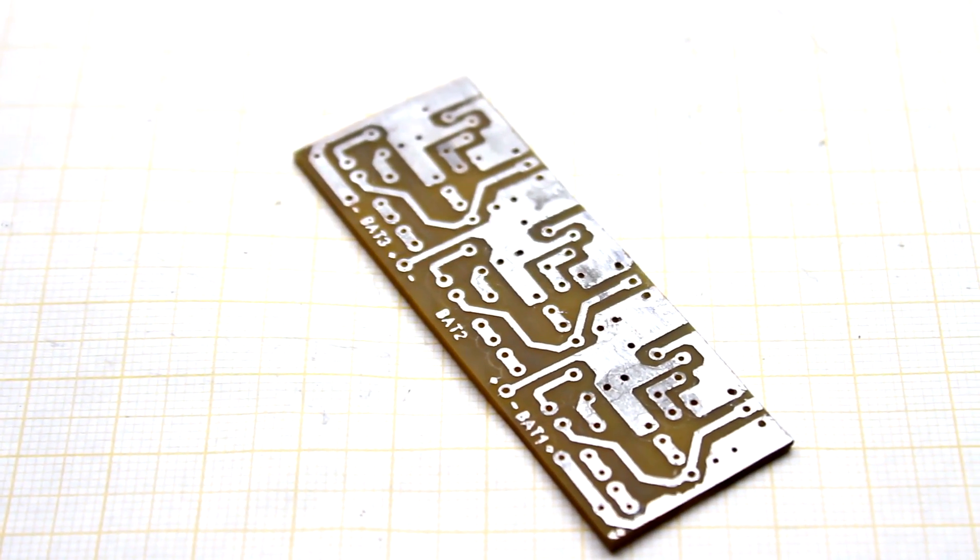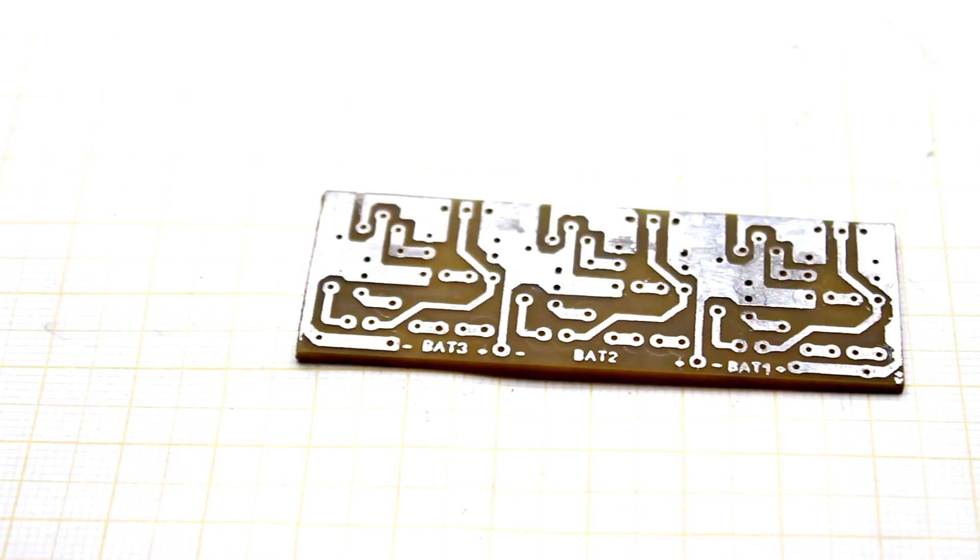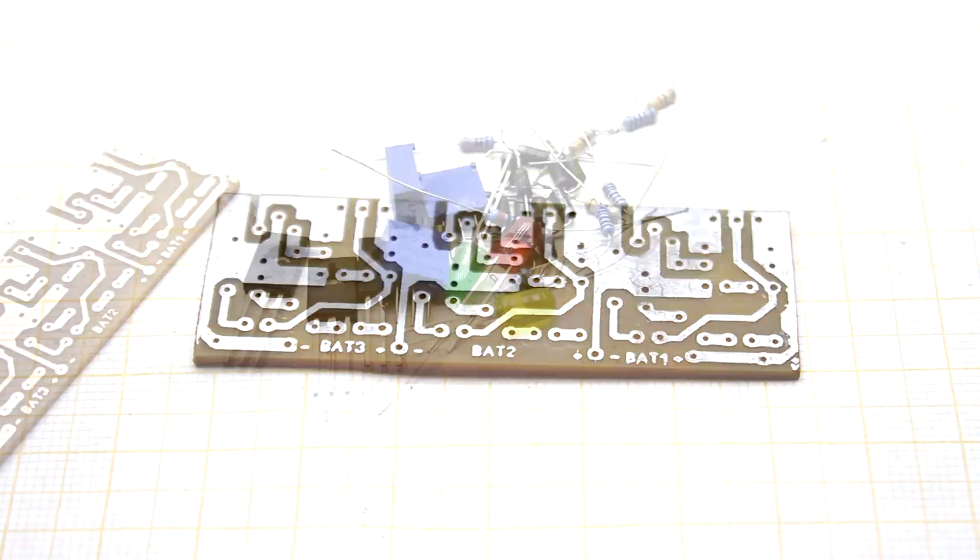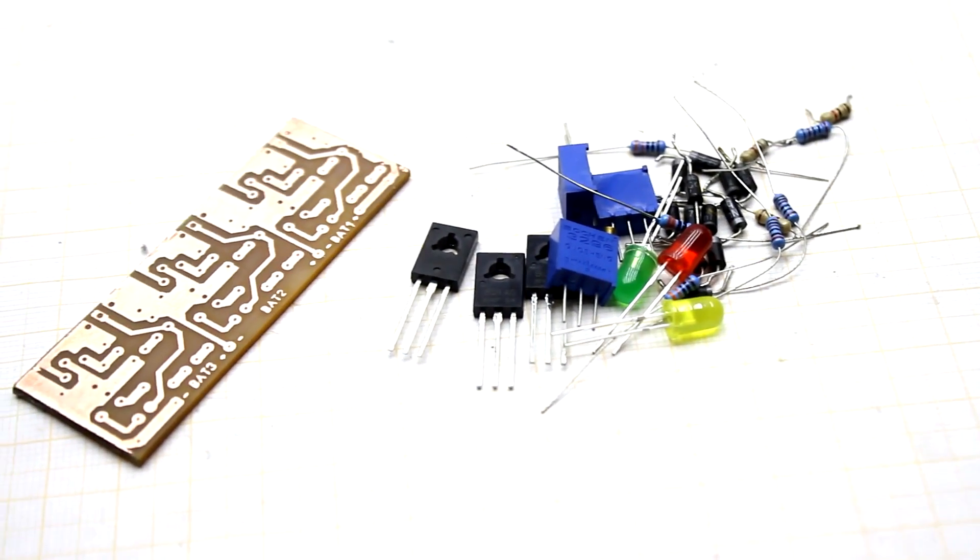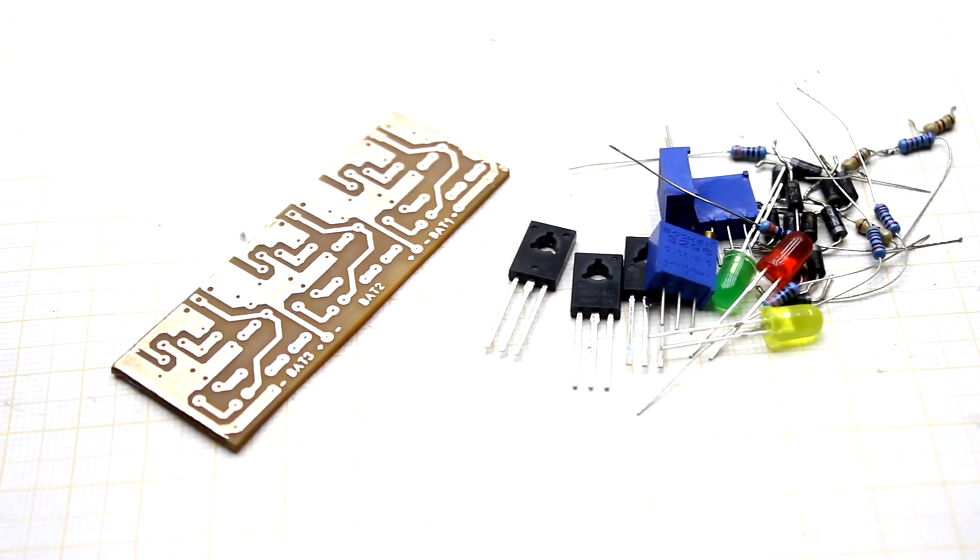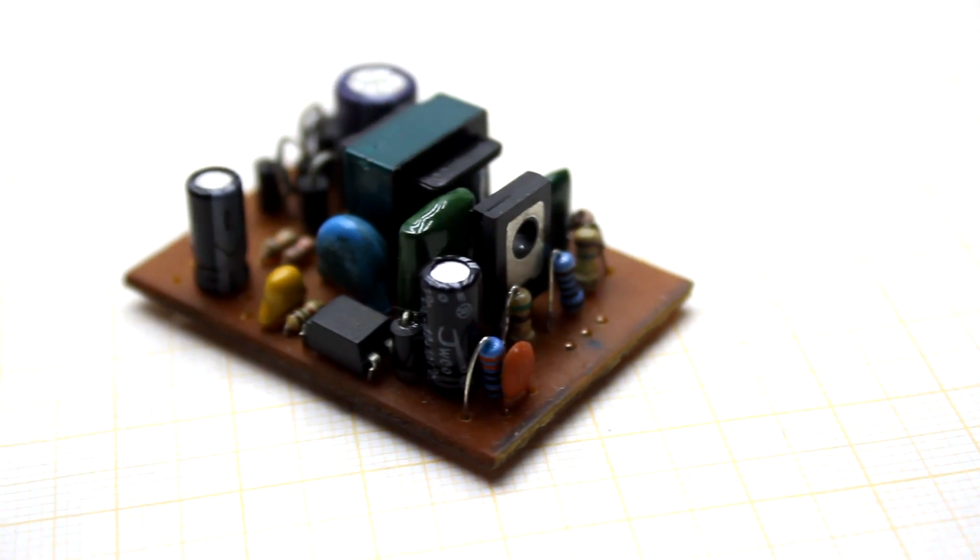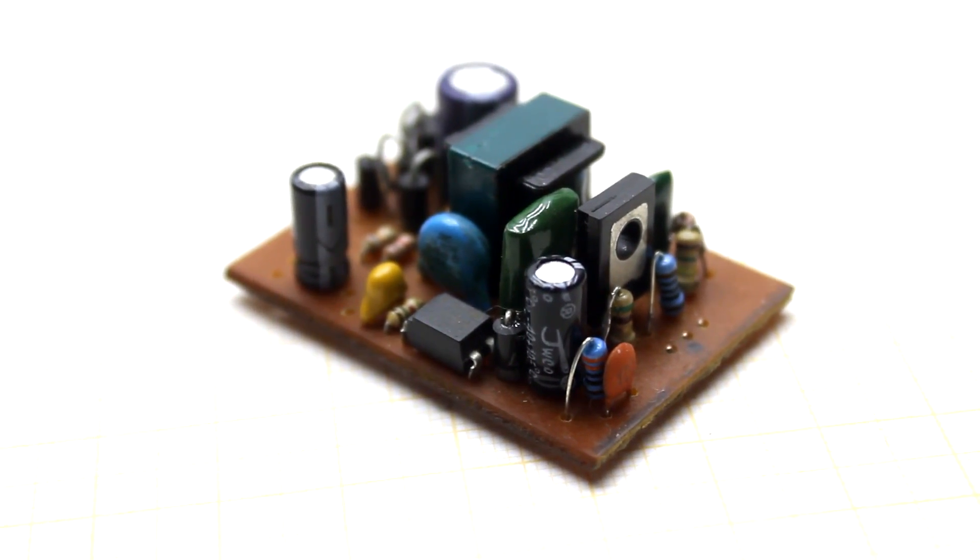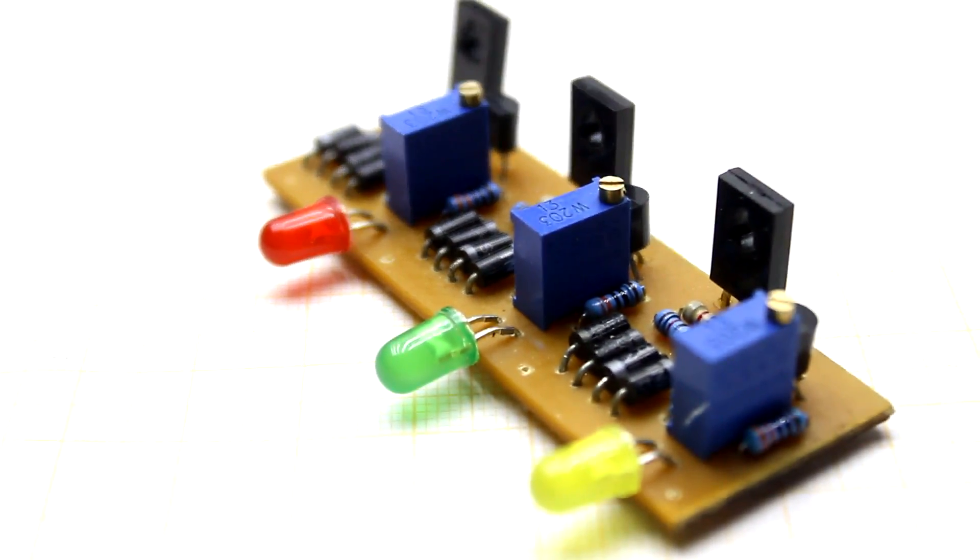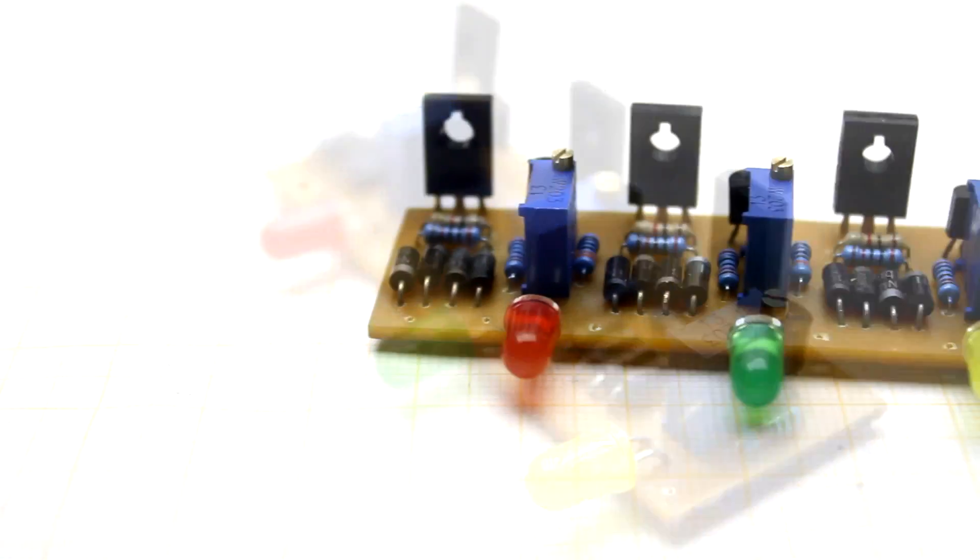The PCB with the circuit is in the archive of the project, which can be downloaded from the link in the description. The description will also contain links to the purchase of components for assembly, as well as ready-made balancing boards. And if the video is liked, then don't forget to rate it and share with friends in social networks. Have a nice day! With you was Kaysian TV.